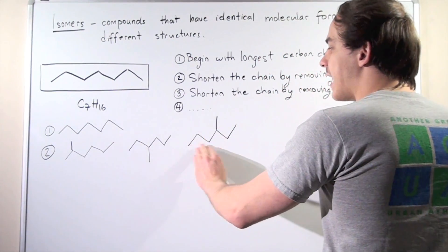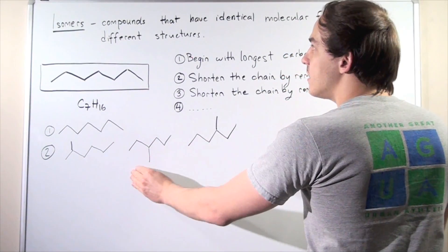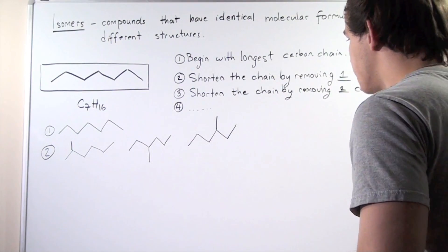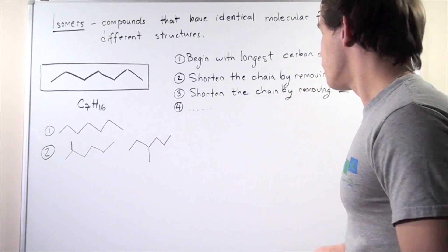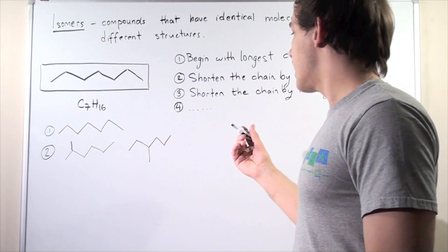And so this is not an isomer because these two have the same molecular formula and the same structural forms. So let's remove this one. So it looks like we're done with step two. Let's go to step three.